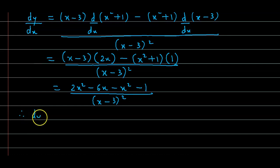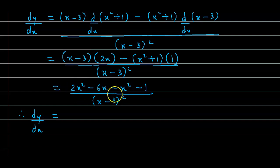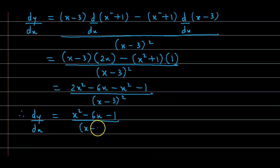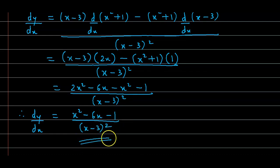So dy/dx equals 2x² − x², which gives x², then minus 6x, then minus 1, all divided by (x − 3)². So this is dy/dx.